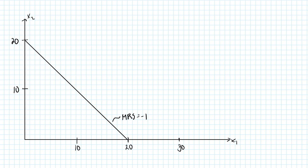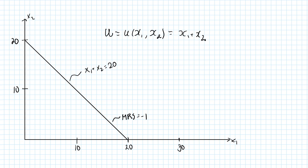So how do we construct an ordinal utility function from these preferences? The important thing is that the utility for all bundles along this indifference curve must be equal. The same must hold for all bundles along any other indifference curve, and the utility must be higher if you go to an indifference curve further out. Here is the simplest way: we define a utility function as the sum of the quantities. This will work because the sum of the quantities along any indifference curve is constant, so the utility is simply equal to the total quantity of good 1 and good 2.